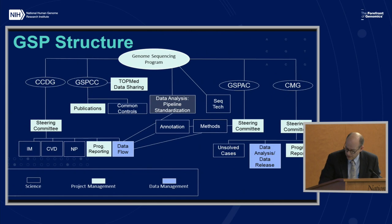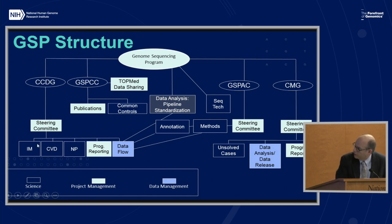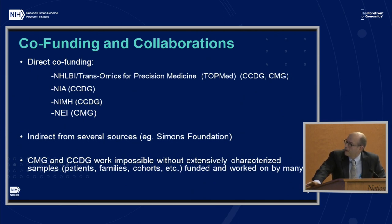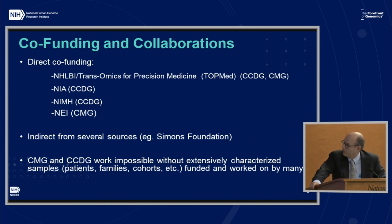There are disease working groups — some I'll point out because I'll talk about them later — for the CCDGs. There's also a data pipeline analysis and standardization, data flow working group, methods working group, and a number of working groups for CMG that Chris may talk about. We are fortunate to have a number of sources of co-funding. Much of that is from NHLBI. There's a lot of collaboration with the Transomics for Precision Medicine effort, or TopMed, some from NIA, NIMH, and NEI.